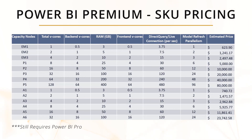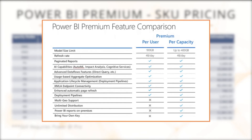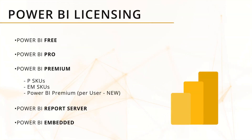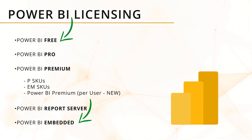What's the biggest advantage to upgrading from Pro to Premium Per User? Really, it depends on what you're looking for. Essentially, you're getting all the features of Premium: AI capabilities, paginated reporting, larger refreshes, a larger model size, and deployment pipelines. Those are the main features most organizations find important. The Power BI licensing we reviewed today covered everything from Power BI Free all the way down to the Power BI Embedded SKU.